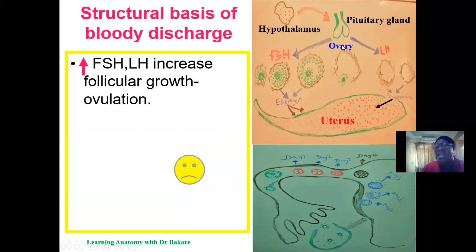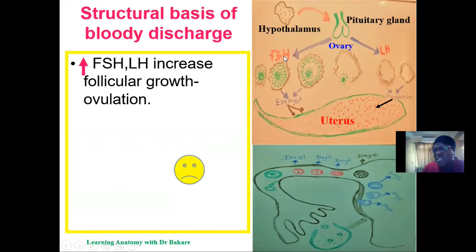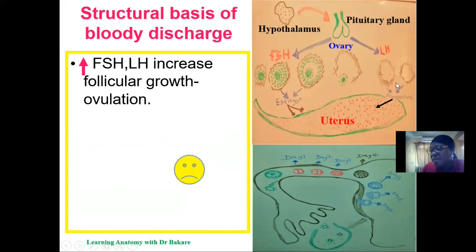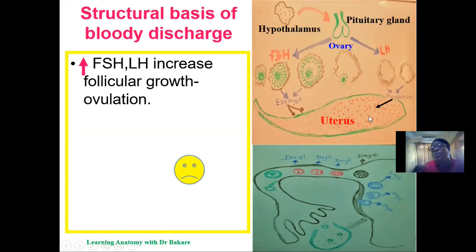The hypothalamus produces GnRH, which initiates the pituitary gland to produce FSH and LH. These target the ovary, initiating follicular development. After ovulation, the remnant of the follicle — called the corpus luteum — is responsible for producing the hormone progesterone, which stimulates the wall of the uterus to proliferate so that implantation can take place.